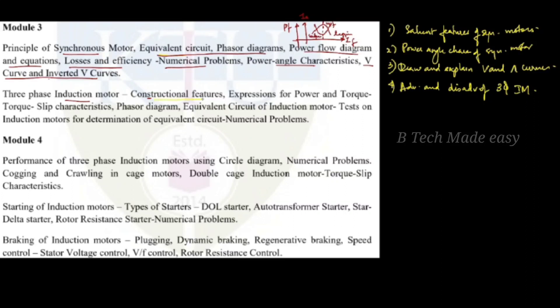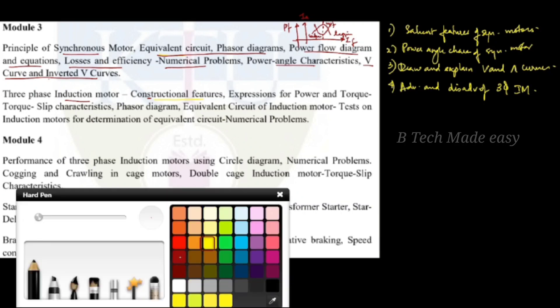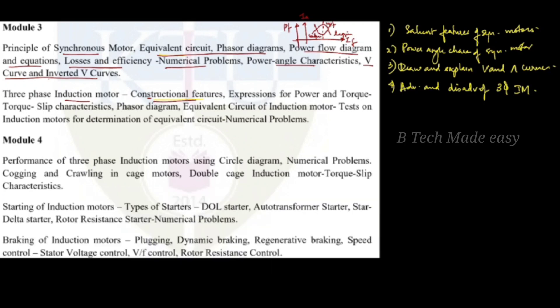We are going to start with constructional features. The induction machine is classified based on construction of the rotor. The two types are the squirrel cage induction motor and the slip-ring induction motor.